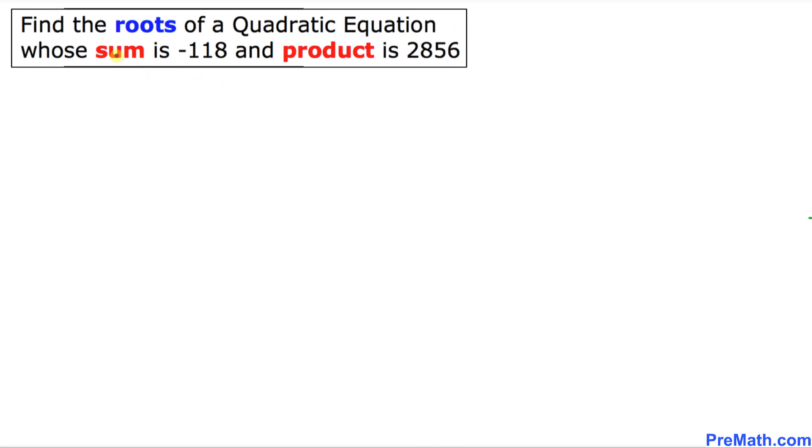Let's go ahead and get started with the solution. We know the sum is negative 118. I'm going to call sum as S, S stands for sum is negative 118, and I'm going to put down P as a product equals to 2856.